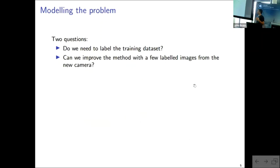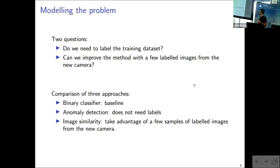And so once I had this dataset, I asked myself two questions. The first one was, do we really need to label all of this data? So can't we use a model that could be independent from the labeling of the data so we can build this kind of model easily? And also, if necessary, it is possible, if we have a good method and we can improve its accuracy, to still label images from a new camera that we are going to install. And so what I wanted to do was to compare three different approaches to do this. So a binary classifier that could distinguish blocked from clean images, an anomaly detection approach that doesn't need any labels, and an image similarity approach, where here the idea is that we can take advantage of a sample of labeled images from a new camera.